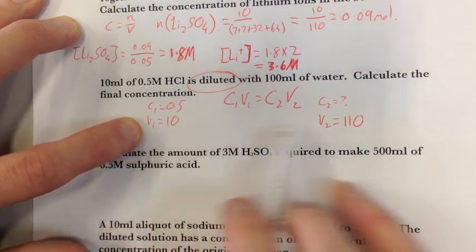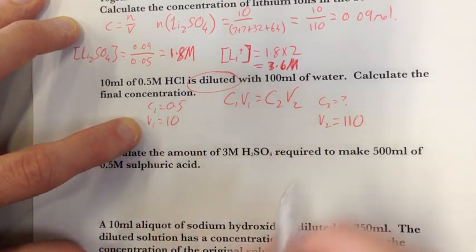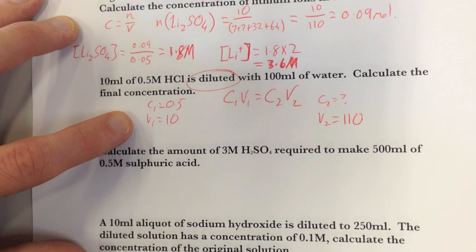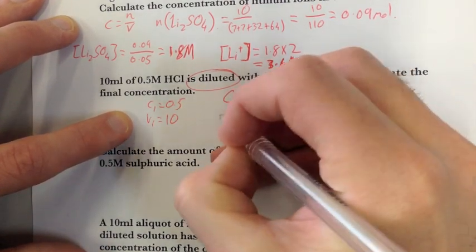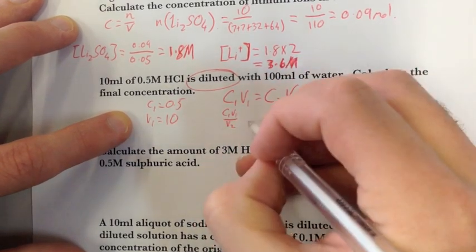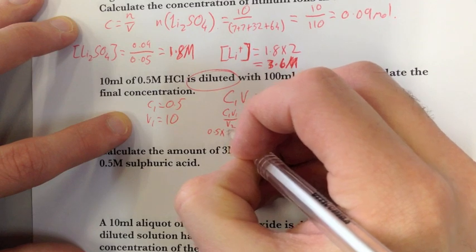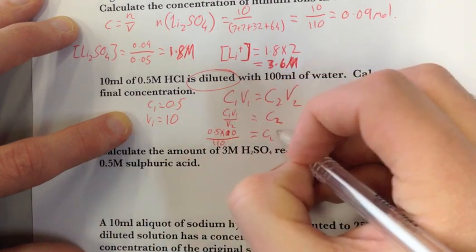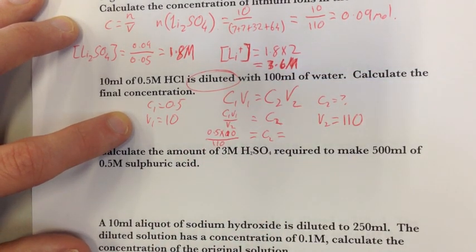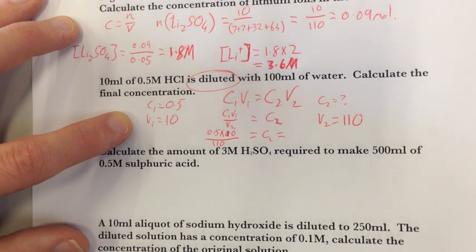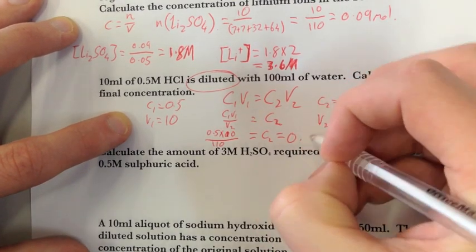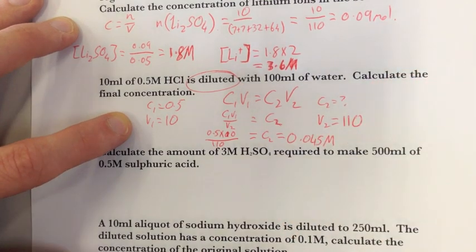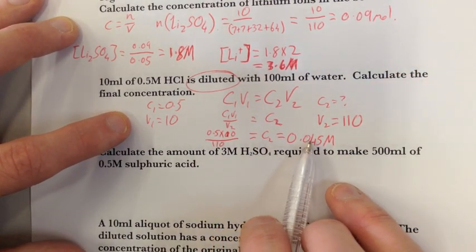Now I just need to make sure that these volumes are in the same units. So that's alright. Rearrange this to work out what my concentration 2 is. I get C2 equals C1V1 over V2. So this is equal to 0.5 multiplied by 10 divided by 110 equals C2. Let me just work this out, 0.5 times 10 divided by 110. It is 0.045 molar.